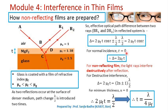For normal incidence, we can write R = 0, and therefore the optical path difference between ray BR1 and ray DR2 can be written as 2μ_f·t.